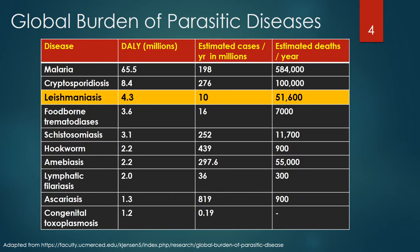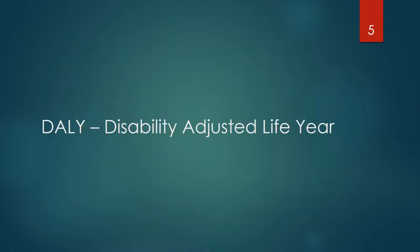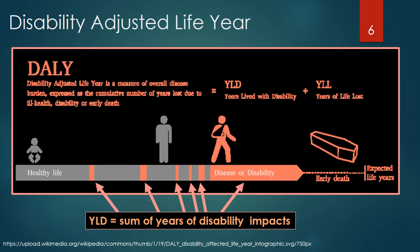This table presents the global burden of major parasitic diseases. The global burden order is determined by their DALY impact in millions. This session will focus on leishmaniasis with a disability adjusted life year, or DALY, impact of 4.3 million. Leishmaniasis is estimated to cause 10 million new cases and result in 51,600 deaths per year.